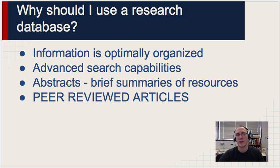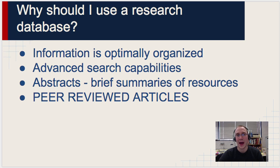So let's talk about why we should use research databases instead of just using something like Google. First of all, in research databases the information is organized incredibly well, and we'll talk about how to use that to your advantage in just a minute. Also, research databases have tremendous advanced search capabilities, and they give you abstracts of articles before you look at them. You could read brief summaries of just about every resource before you decide whether or not to use them, which really comes in handy and helps save you a lot of time.